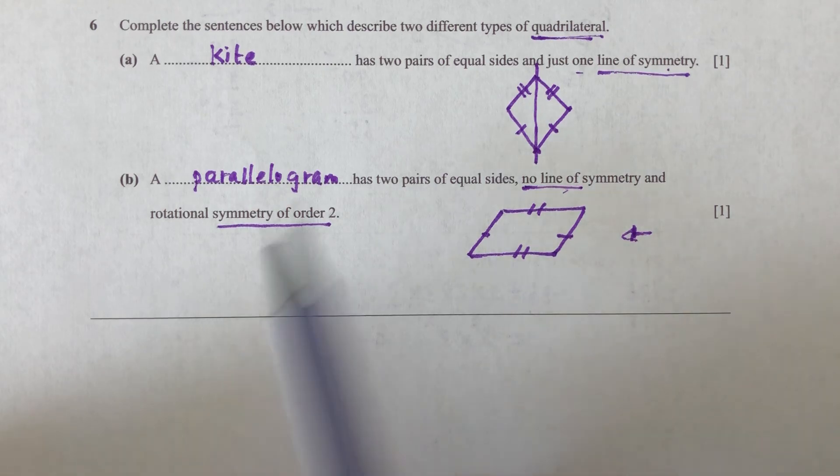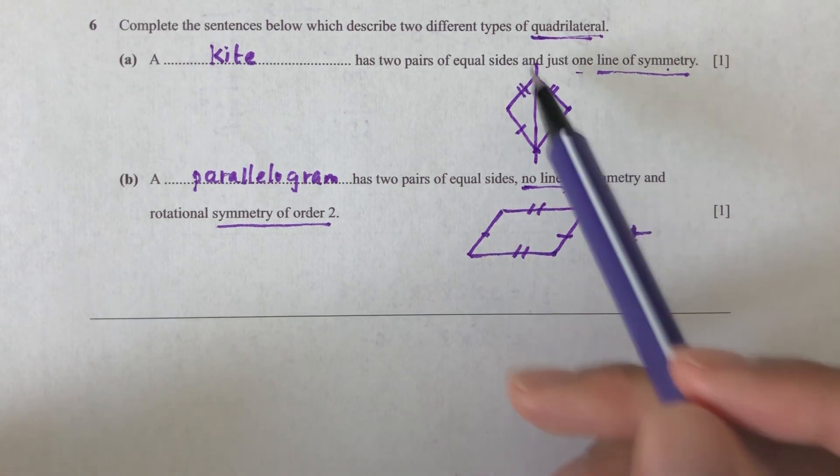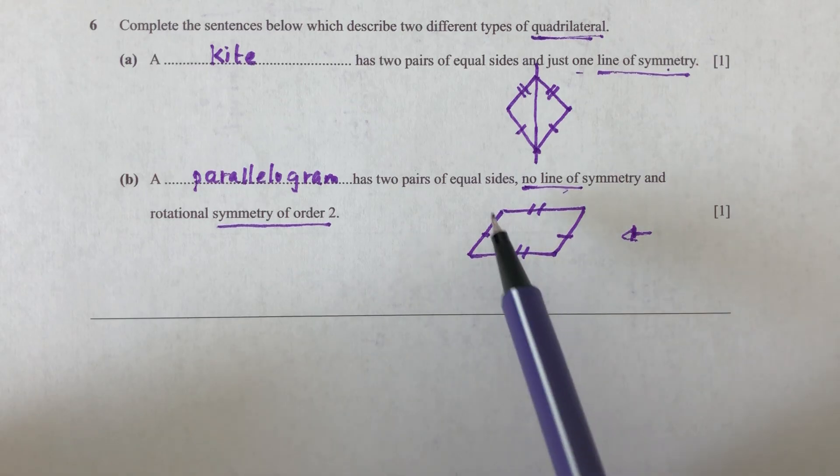So you will ask, okay, how do I find those answers? So the first thing you will need is you will need to know your shapes. And then you will have to proceed by elimination to find those two answers.